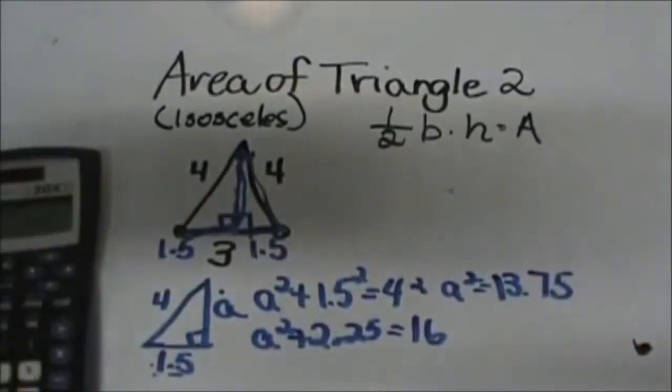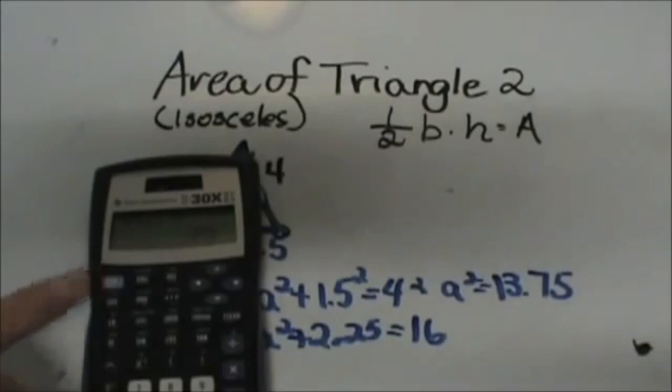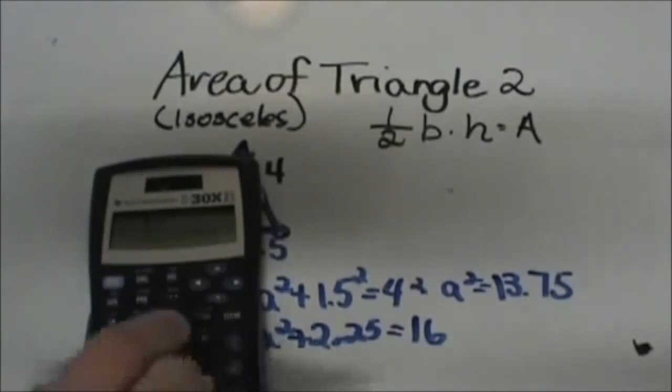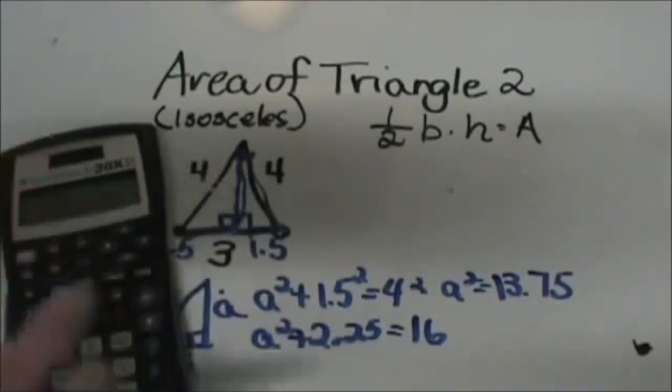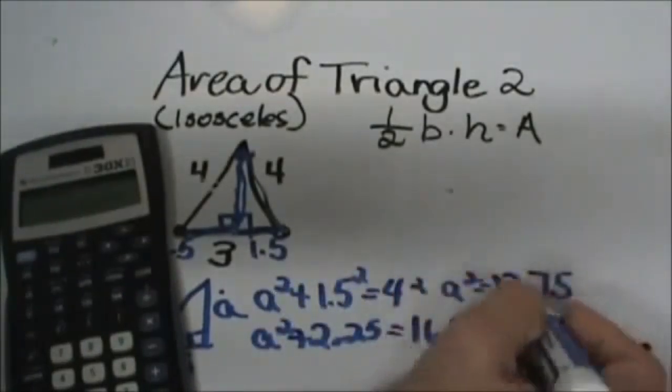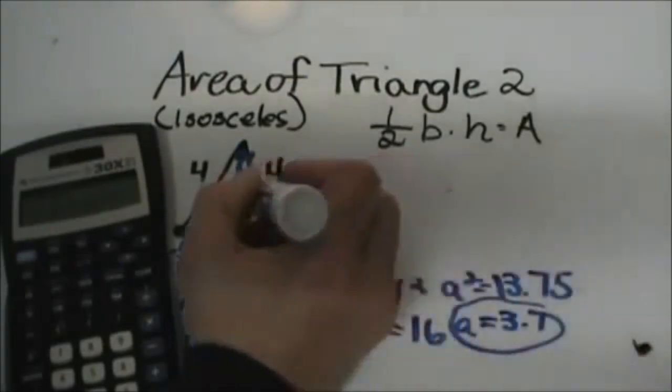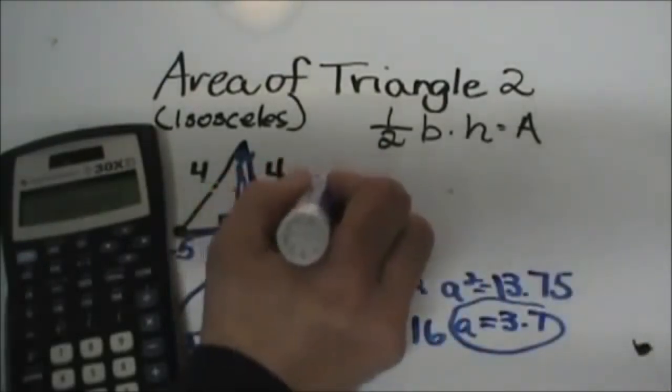Now in your calculator you can actually use this. You can do your second function button and x squared and that gives you the square root, and then second and the negative sign that pulls up the last answer and I get the square root of 13.75 is 3.7. So that is my height of my isosceles triangle.